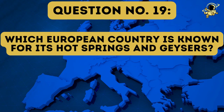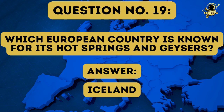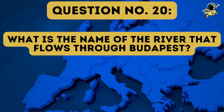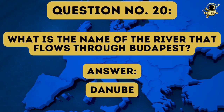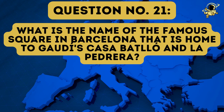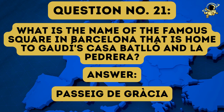And then we come to question number nineteen: Which European country is known for its hot springs and geysers? And the answer to question number nineteen is Iceland — it is quite far away, but it is still part of Europe. And then we have question number twenty: What is the name of the river that flows through Budapest? The answer to question number twenty is the Danube. What is the name of the famous square in Barcelona that is home to Gaudi's Casa Battleo and La Pedrera? And the answer to question number twenty-one is Passeig de Gràcia.